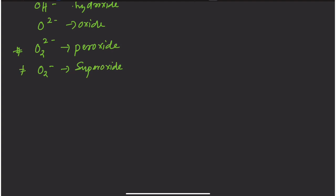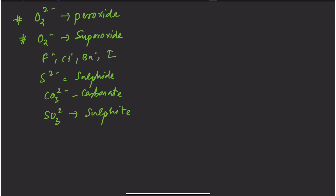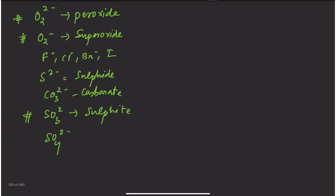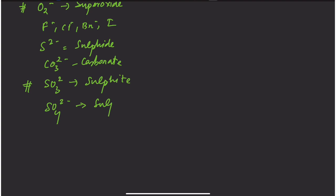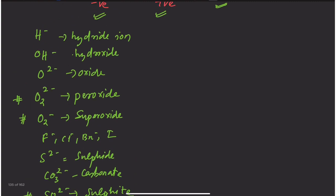F⁻ is fluoride, Cl⁻ is chloride, Br⁻ is bromide, I⁻ is iodide — the halide ions. S²⁻ is sulfide ion. CO₃²⁻ is carbonate ion. SO₃²⁻ and SO₄²⁻ are sulfite and sulfate ions respectively. Note that the -ate ending indicates these oxyanion ligands.